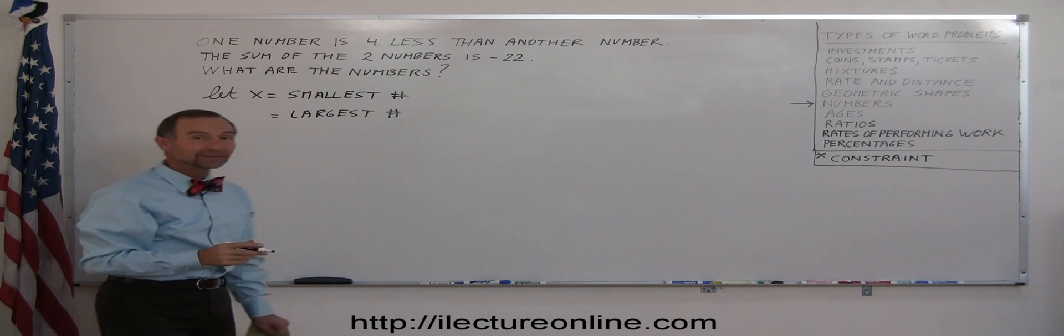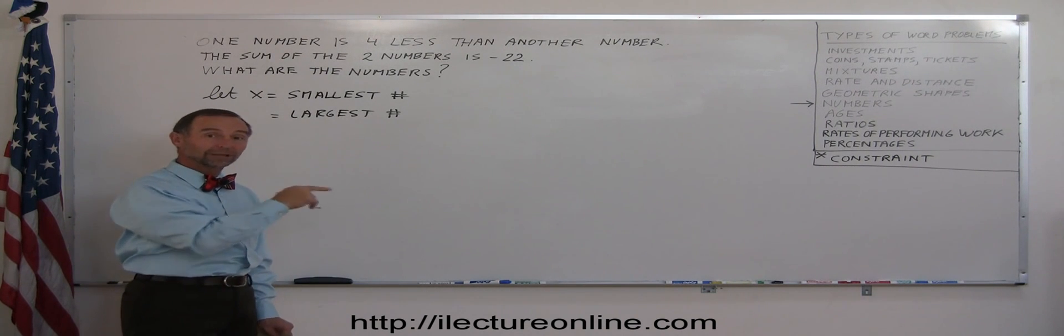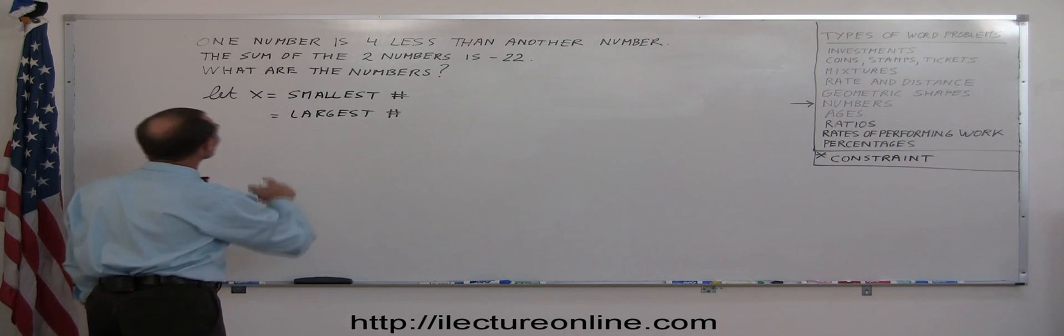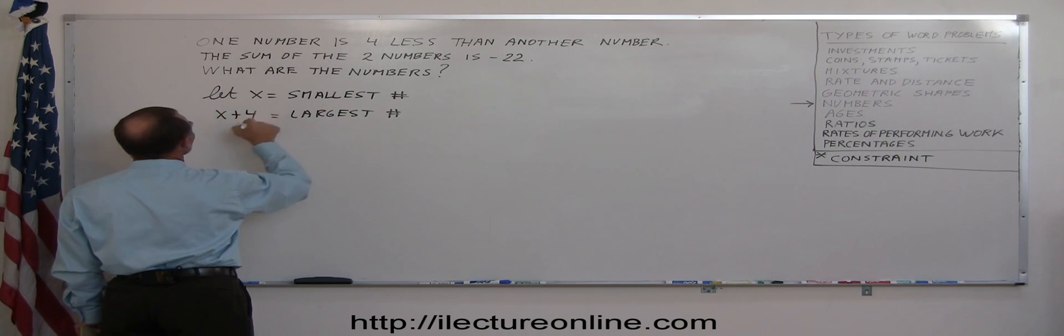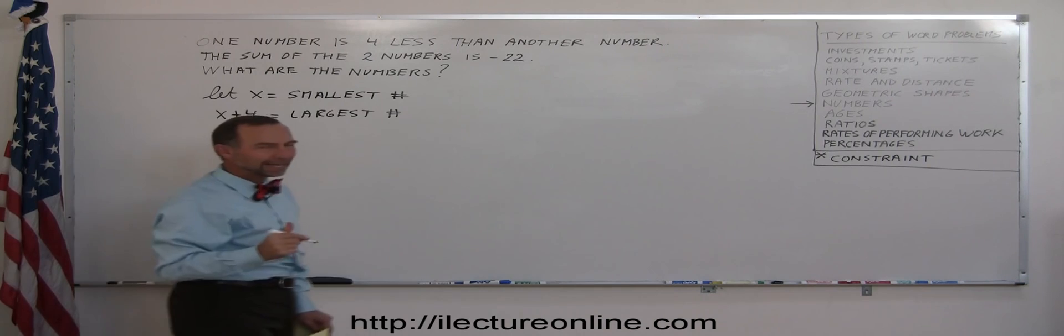If one number is four less than another, that means that the bigger number must be four more than the smaller number. All right, so let's try that. x plus four, that must equal the largest number. And that will work.